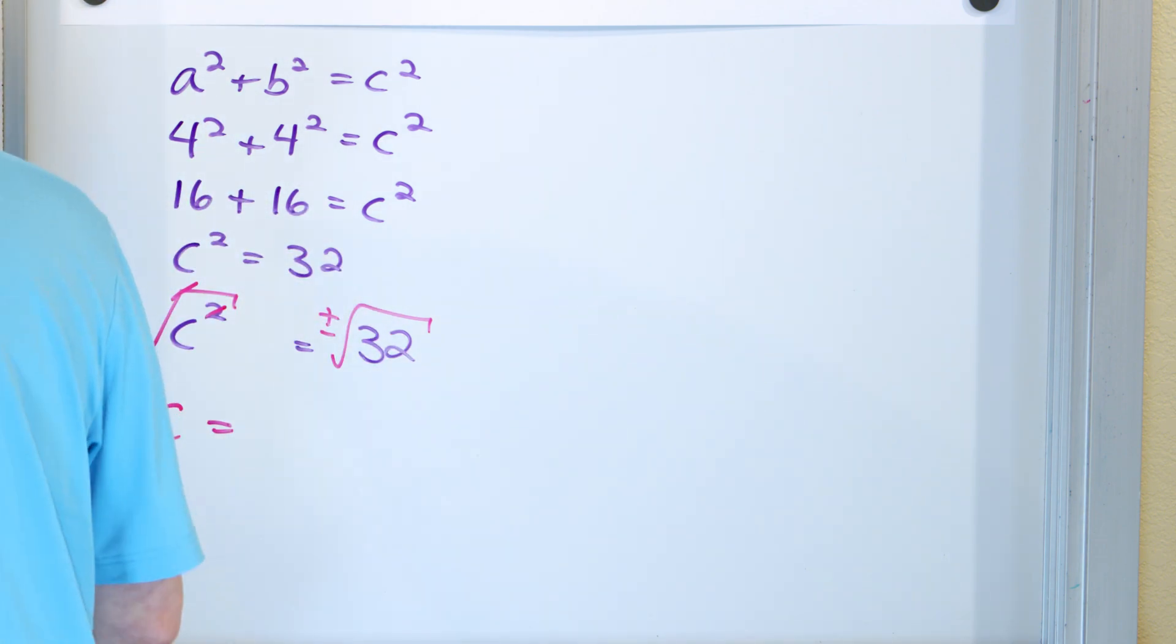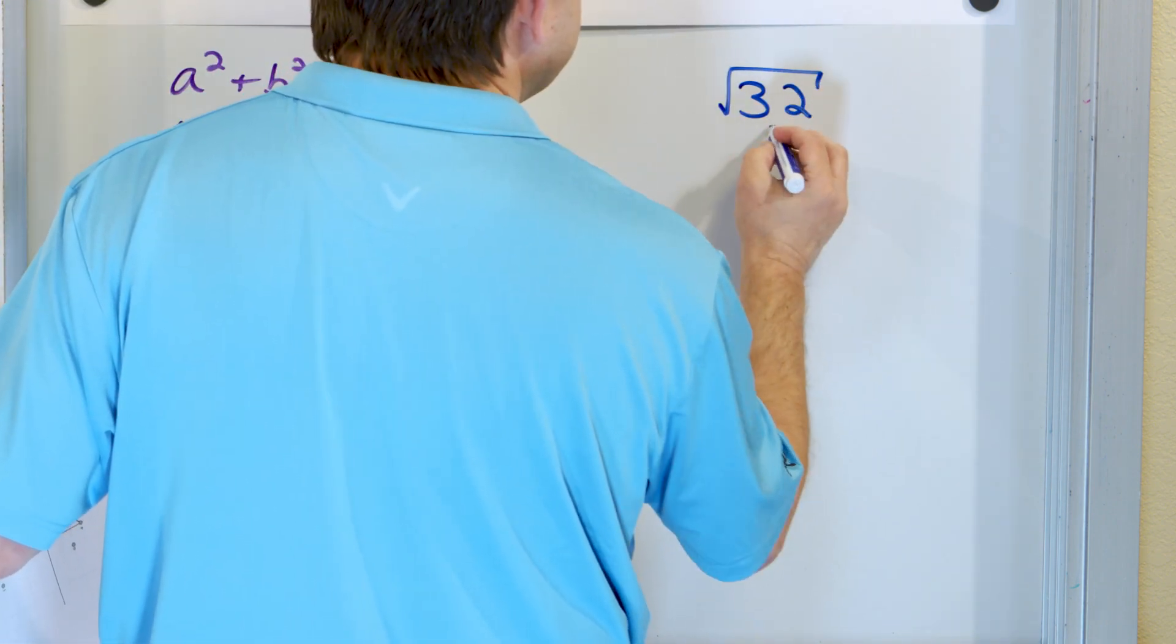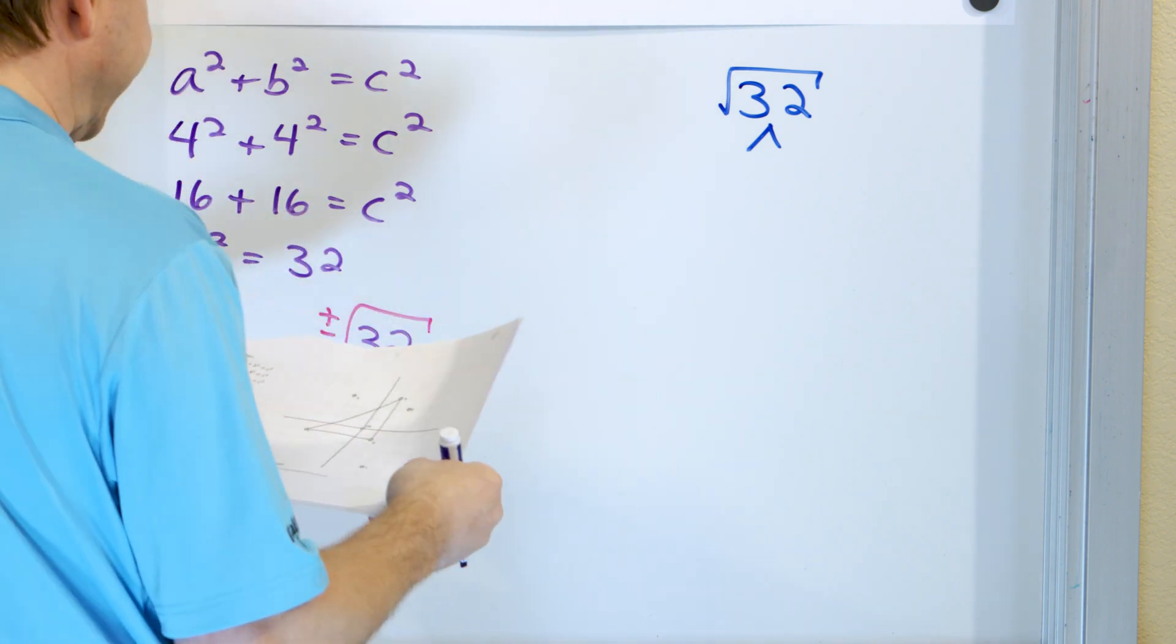Now, how do we figure out what that is? That's the trick. So I don't know what that is. That's not a perfect square. So you need to break it into something simpler.